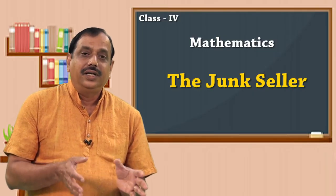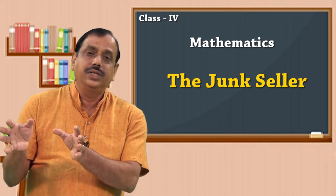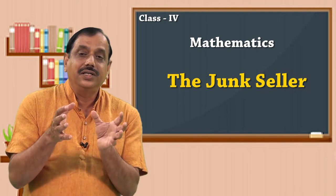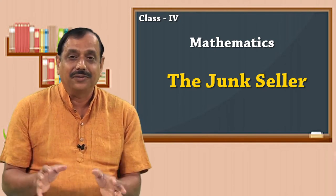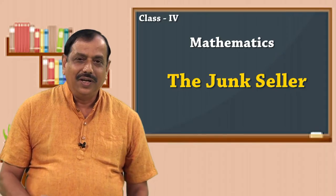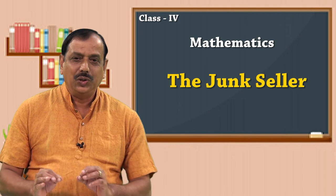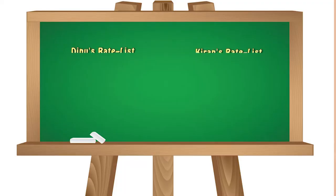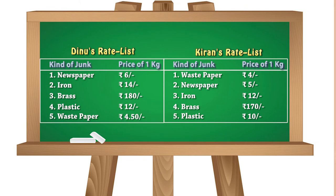In this story, Kiran sells her junk to Dinu's junk shop. Let us see Dinu's junk shop rate list displayed on your screen. Observe the categories of junk he is going to purchase and the rate at which he buys each on a per kg basis. Compare Kiran's rate list with Dinu's rate list and judge whether she is going to make a profit by selling her junk at Dinu's shop.